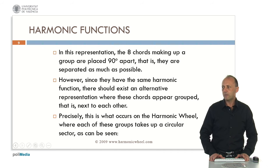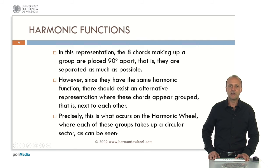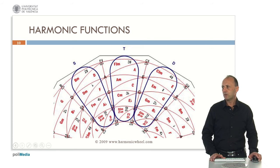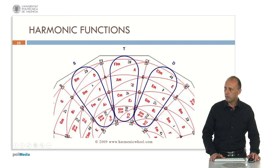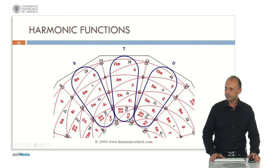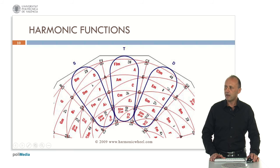This is what occurs on the harmonic wheel, where each of these groups takes up a circular sector. Here we have the harmonic wheel. In this circular sector we have the C major chord, and in the same group we find its relative A minor, the parallel A major, its relative F sharp minor, the parallel F sharp major, and so on. This is the group of tonic. In another group we have the G major chord, which is the dominant, as well as its relative chord E minor, the parallel E major, the relative C sharp minor, C sharp major, and so on. This is the group of eight chords with dominant harmonic function.